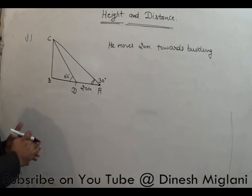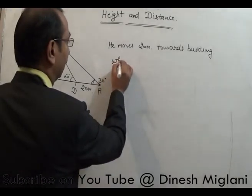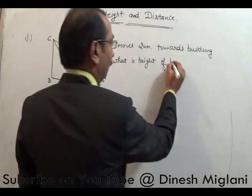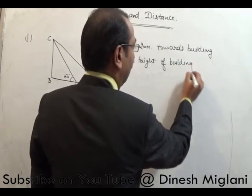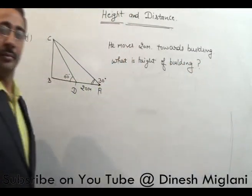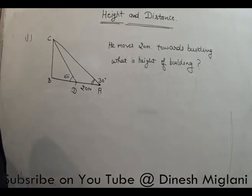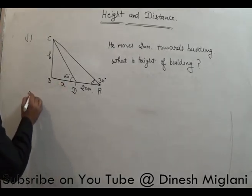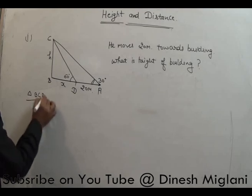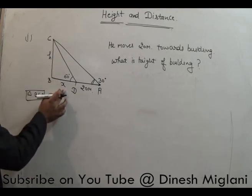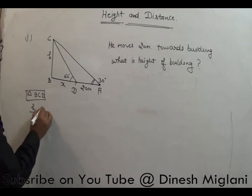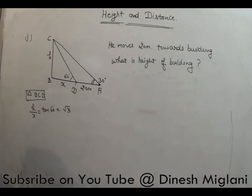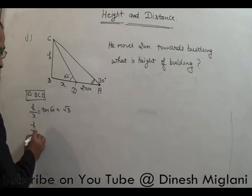Based on this, we have to find out what is the height of the building — that is, the length of BC. If I assume BC to be H and DC to be X, we have two triangles. In triangle BCD, perpendicular upon base gives H upon X equal to tangent 60, which equals root 3. So H upon X equals root 3.